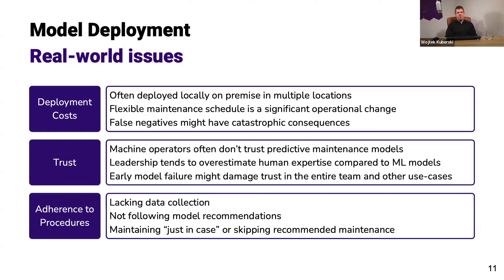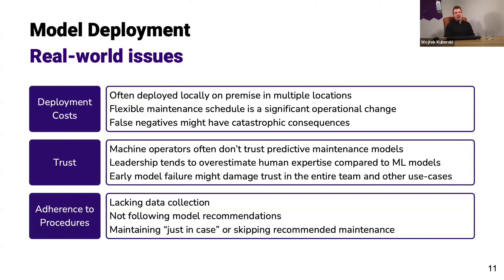A flexible maintenance schedule is a significant operational change that carries costs — not necessarily monetary, but definitely time costs. So we need to be quite sure the model will perform well in the real world before bearing those costs. False negatives can have catastrophic consequences. If a wind turbine needs maintenance but the model confidently and incorrectly predicts that it doesn't, we could have catastrophic consequences — such as a potential braking failure — which is something we want to avoid at almost all costs.